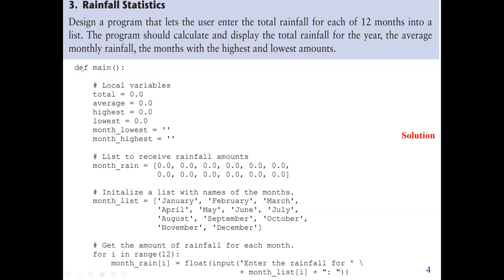Let's start with the program. We have our main function. We declare our local variables: one to store the total rainfall, one for the average, one for the highest rainfall, one for the lowest rainfall, one for the month with the lowest, and one for the month with the highest. The list to receive the rainfall amounts is named month_rain, and we have 12 months for the year. We also initialize a list with the names of the months — from January to December — as strings, the same as in the previous example with days of the week.